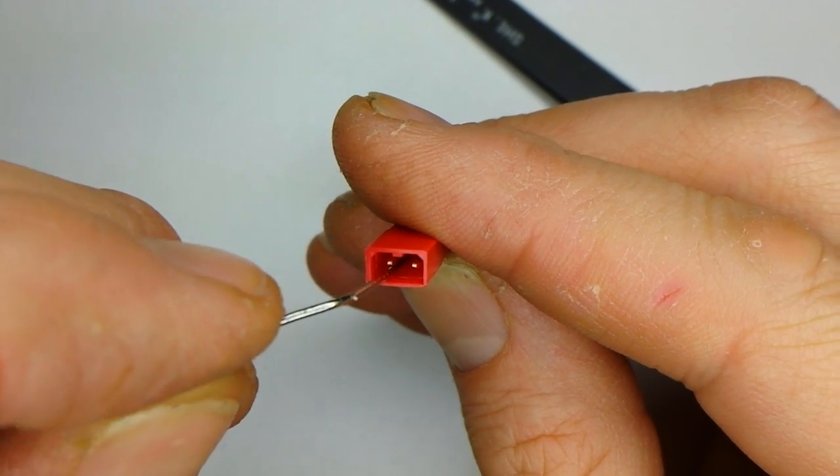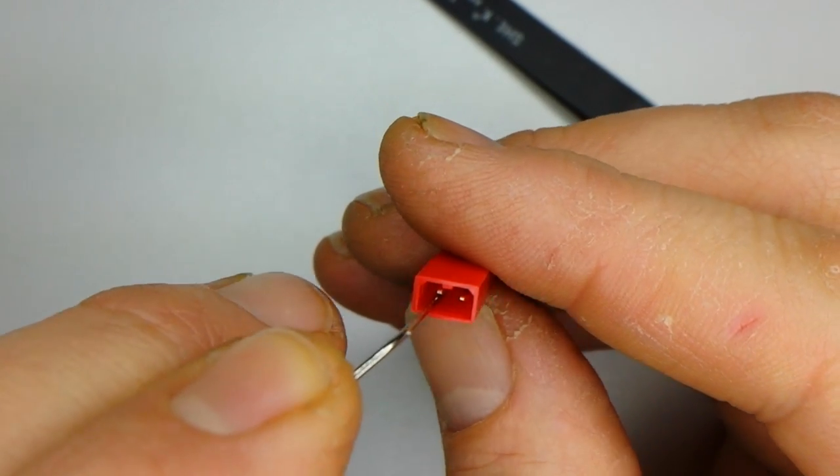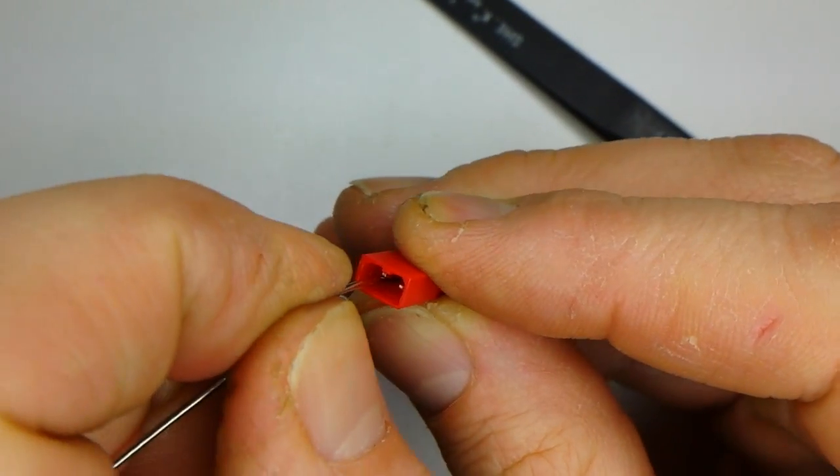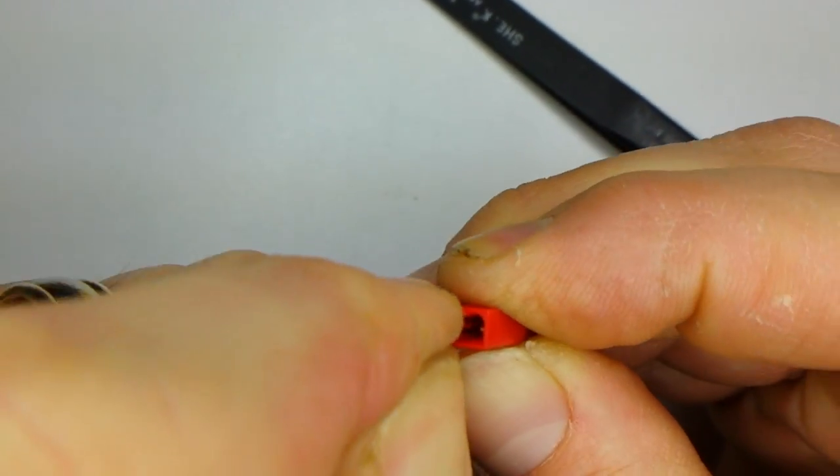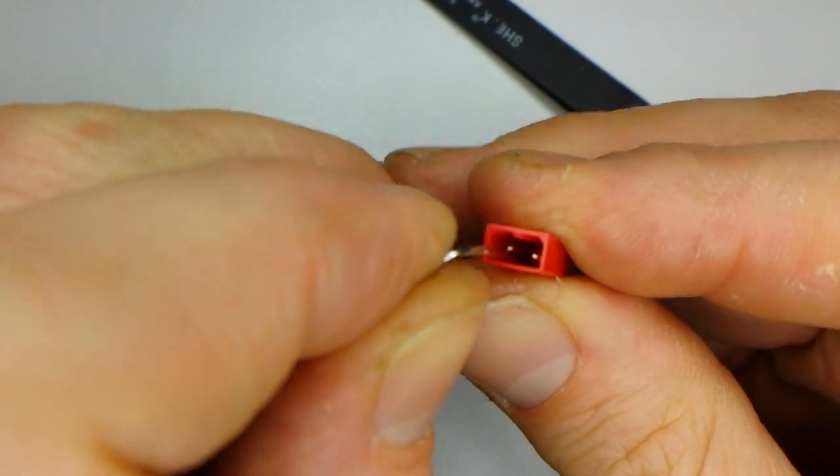So you put your paper clip in, just try and line it up with the pin, and then basically jam it in there and wiggle around like you're picking a lock. And once you feel yourself poke through, you will have flattened out that pin.